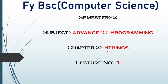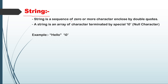Chapter Number 2 is Strings. So what is meant by string? A string is a sequence of zero or more characters enclosed by double quotes. A string in C is an array of characters terminated by a special character slash zero, also known as the null character. For example, the word 'hello' in double quotes, terminated by slash zero — this is an example of a string.